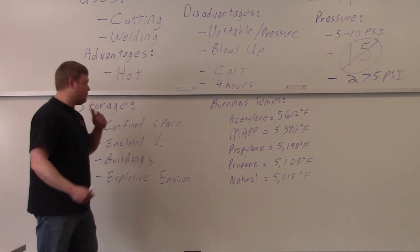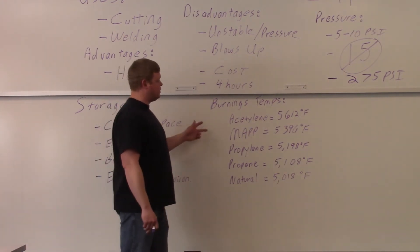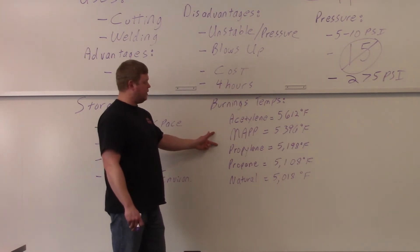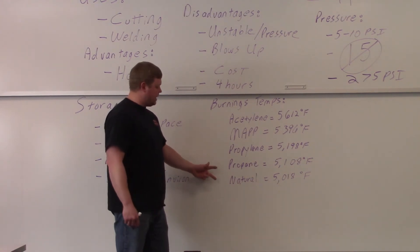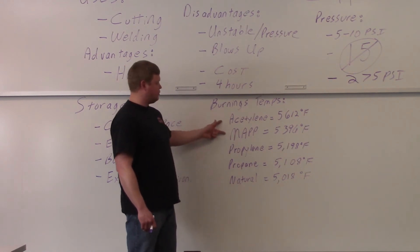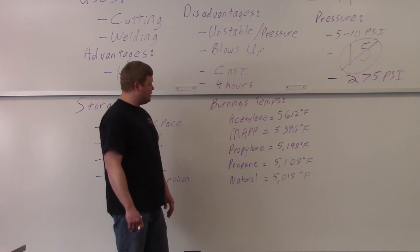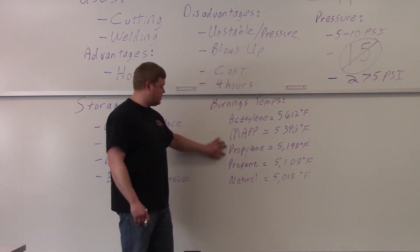The burning temperatures, which I was talking about before: acetylene right here at the top at 5,612 degrees Fahrenheit. Map gas is 5,396 degrees Fahrenheit. Propylene, 5,198 degrees. Propane, 5,108 degrees. Natural gas, they're using that now, it's 5,018 degrees Fahrenheit. You can see acetylene's right at the top. You really should know all of these gases. The main reason that they'll use these other four is because acetylene is unstable. That's why it's a safety issue. Some people use these gases here.